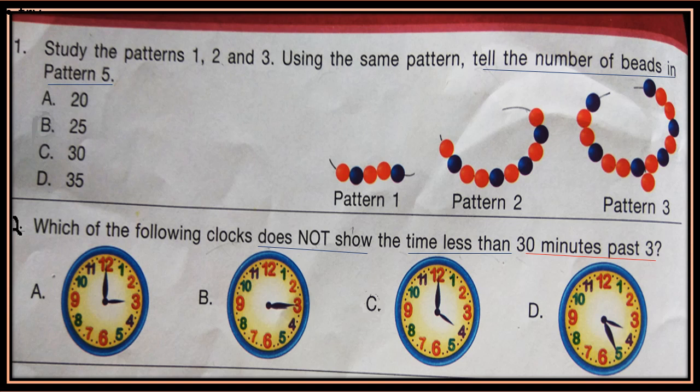Question 2. Which of the following clocks does not show the time less than 30 minutes past 3? Now see the clocks and choose the clock which does not show the time less than 30 minutes past 3.